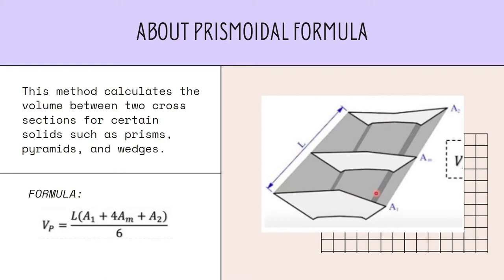The difference is that the average end area method is more commonly used and requires less field measurements, but for certain solids the prismoidal formula is the best choice as it gives the most accurate volume. The prismoidal formula applies to volumes of all geometric solids that can be considered as prismoids — solids having ends that are parallel but not similar and trapezoidal sides that are not congruent. Most earthwork solids from cross-section data fit this classification.